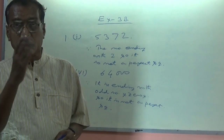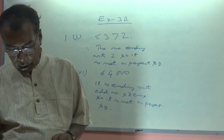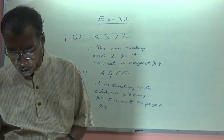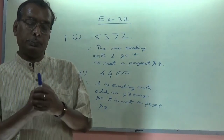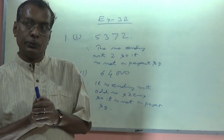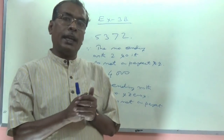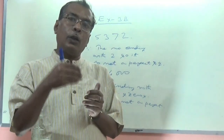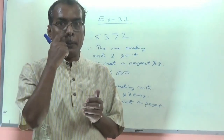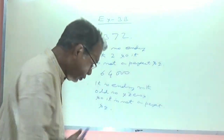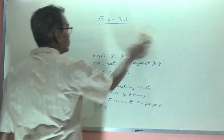Now question number 2: which of the following are the square of an even number? I have told you that the square of any even number is also even.